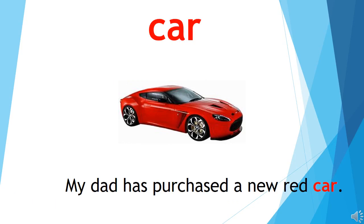The word is 'car.' Children, you all know that a car is a road transport — it is a four-wheeled object that runs on the road, and we enjoy going out in our daddy's car. Let's use this word in a sentence: 'My dad has purchased a new red car.' We can also say 'Let's go for a long drive in my car.' Children, I hope you have understood how to use different words in sentences, and you will read these vocabulary words again and again and learn them.